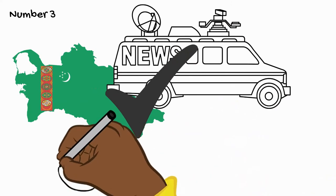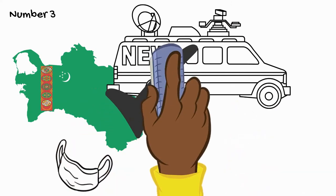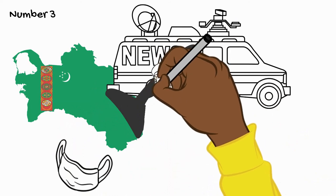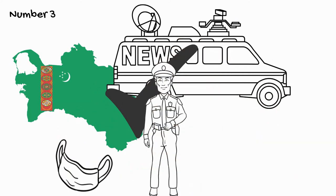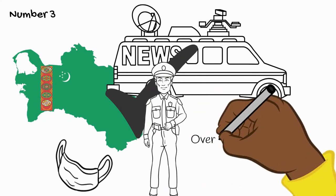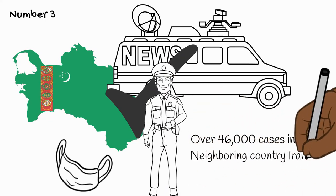This is one of the heaviest news-controlled states in the world, and anyone caught wearing a mask or talking about it on the streets would be arrested. They also have officially reported no cases of the virus. Neighbours, Iran has reported 46,000 cases so far.